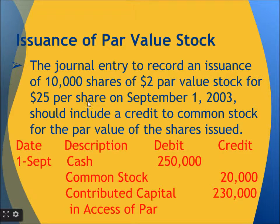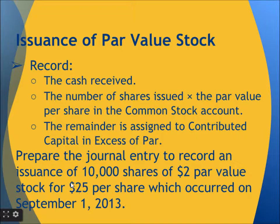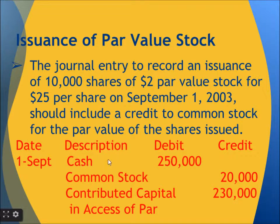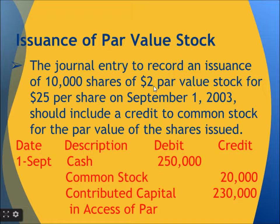The general entry to record the issuance of 10,000 shares of $2 par value stock for $25 per share on September 1 should include a credit to common stock for the par value of the shares issued. Since the issuance is 10,000 shares at $25 per share, $25 multiplied by 10,000 gives us $250,000 in cash. When the company issued 10,000 shares, it received $250,000 in cash on the debit side, because the share price was $25 but the par value is $2 per share.